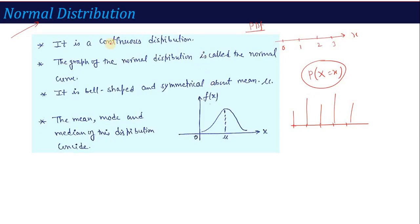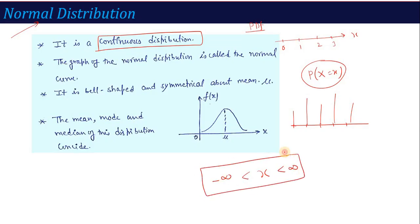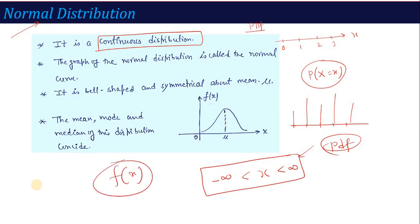Now in this lecture, we are going to talk about continuous distribution. Continuous distribution means x can take any value from minus infinity to plus infinity. Now if x is any variable and it can take any value, then we can calculate the PDF function for any value. The PDF is represented by f(x), and if I plot f(x) with respect to x and I get this type of curve, then I say this curve is the normal curve.